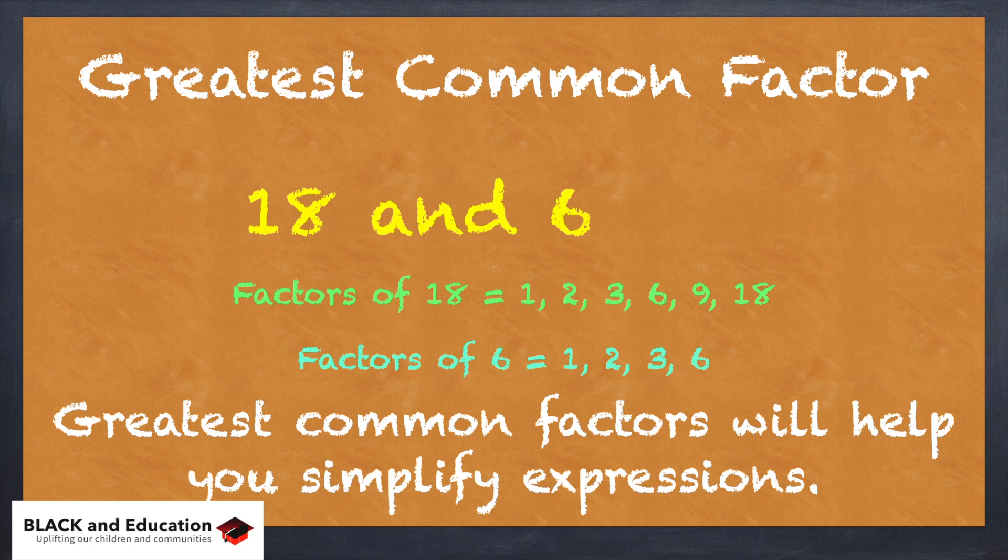So the number that they have in common that's the greatest and the highest of them is 6. 6 is the greatest common factor between 18 and 6.